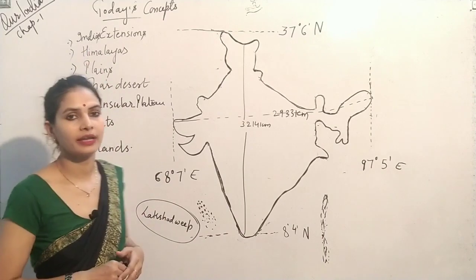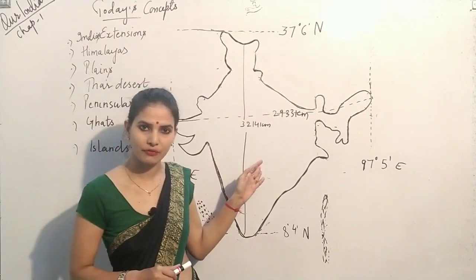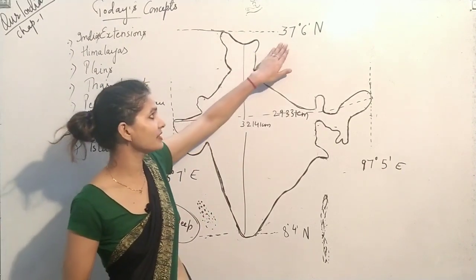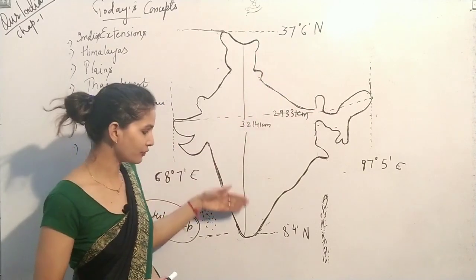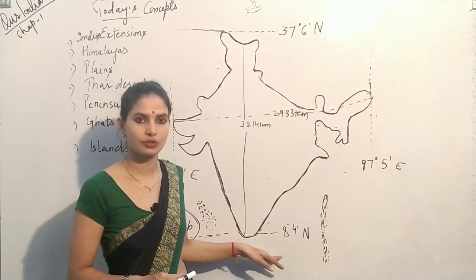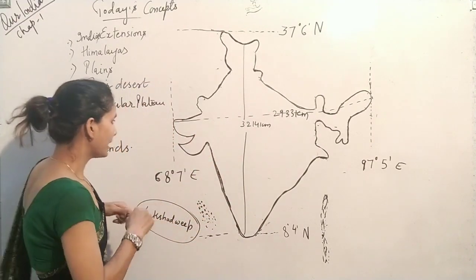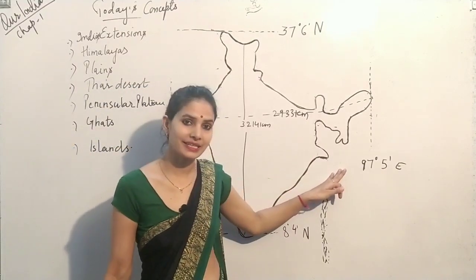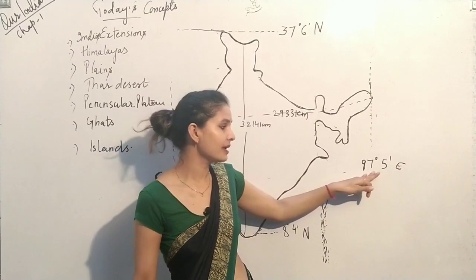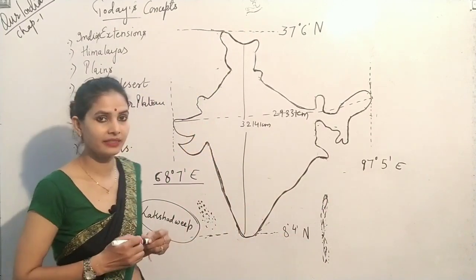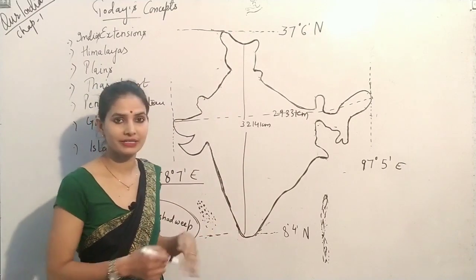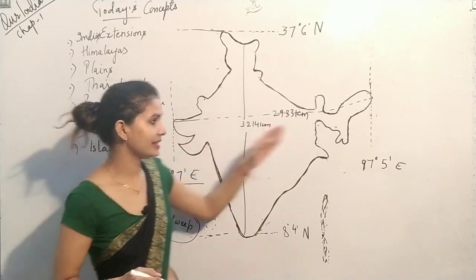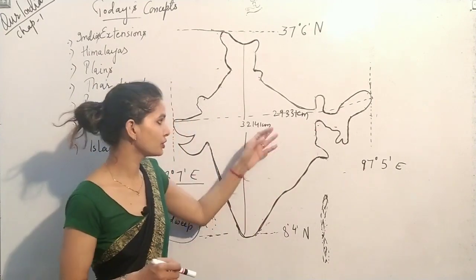The first concept is Indian extensions. Here we have the map of India. The northern part of India is extended up to 37 degrees 6 minutes north, and the southern part is extended up to 8 degrees 4 minutes north. The western part is extended up to 68 degrees 7 minutes east, and the easternmost part is extended up to 97 degrees 5 minutes east. The distance between north and south of India is 3,214 kilometers, and the distance between west and east is 2,933 kilometers.